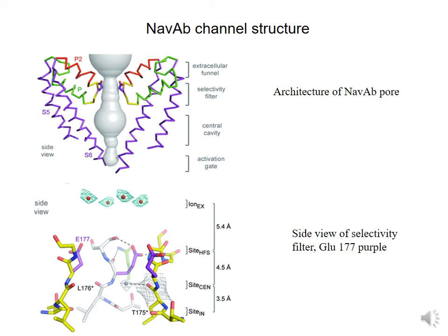More recently, the crystal structure of a sodium channel has been resolved as well. The crystal structure of a bacterial sodium channel called NAVAB has been solved, and the general properties of sodium channels are quite similar to what was discussed for KCSA. One of the major differences, though, is that sodium channels have a selectivity filter that works more like calcium channels — two glutamate residues are present in this selectivity filter that allow the precise binding of sodium ions.